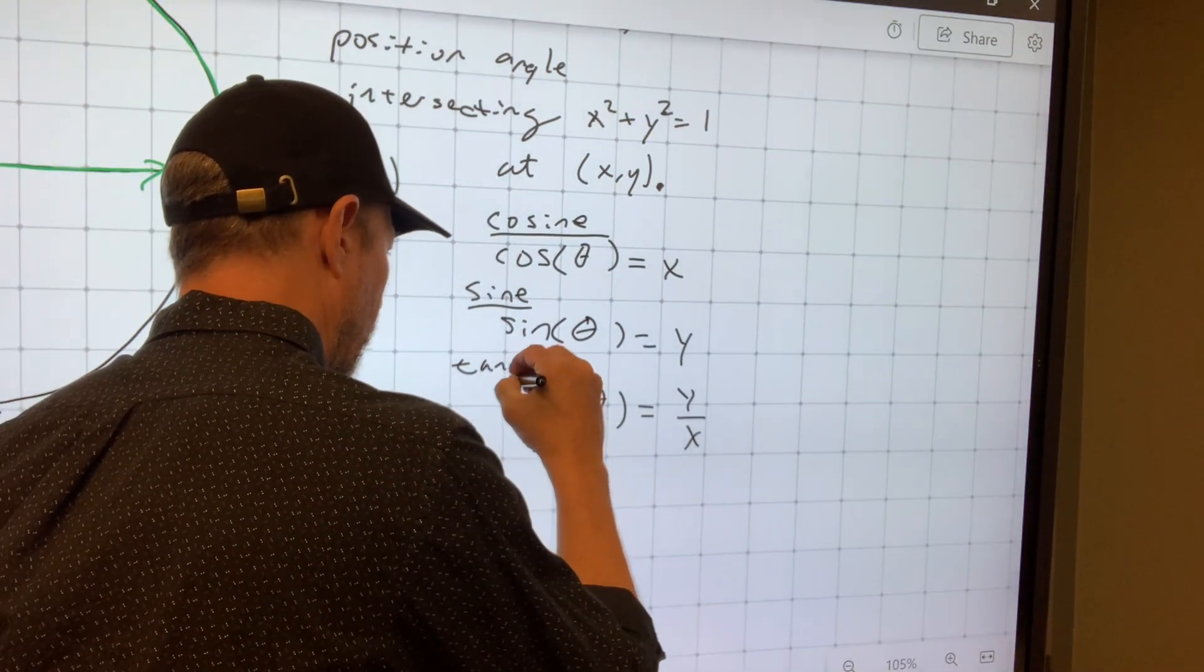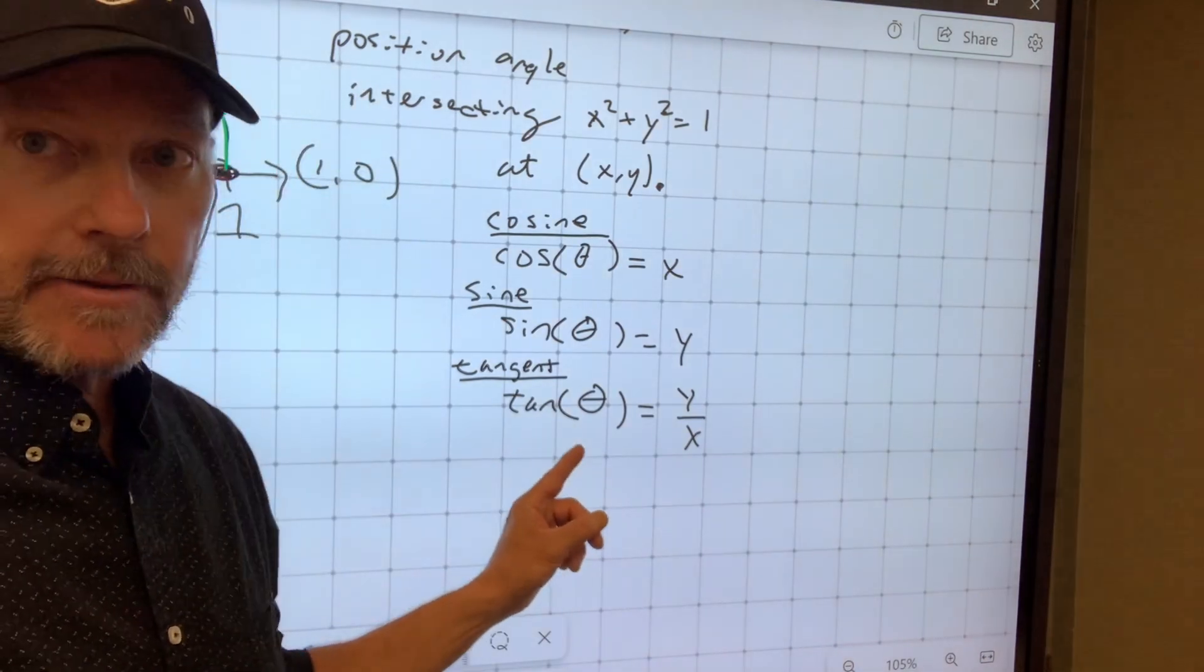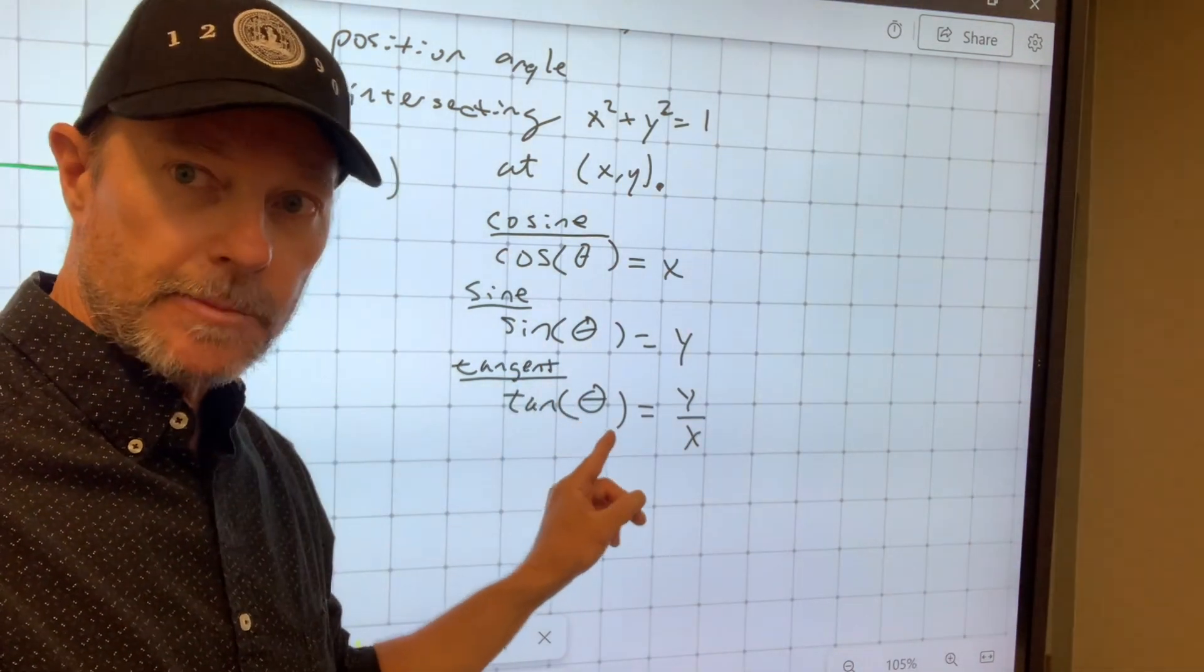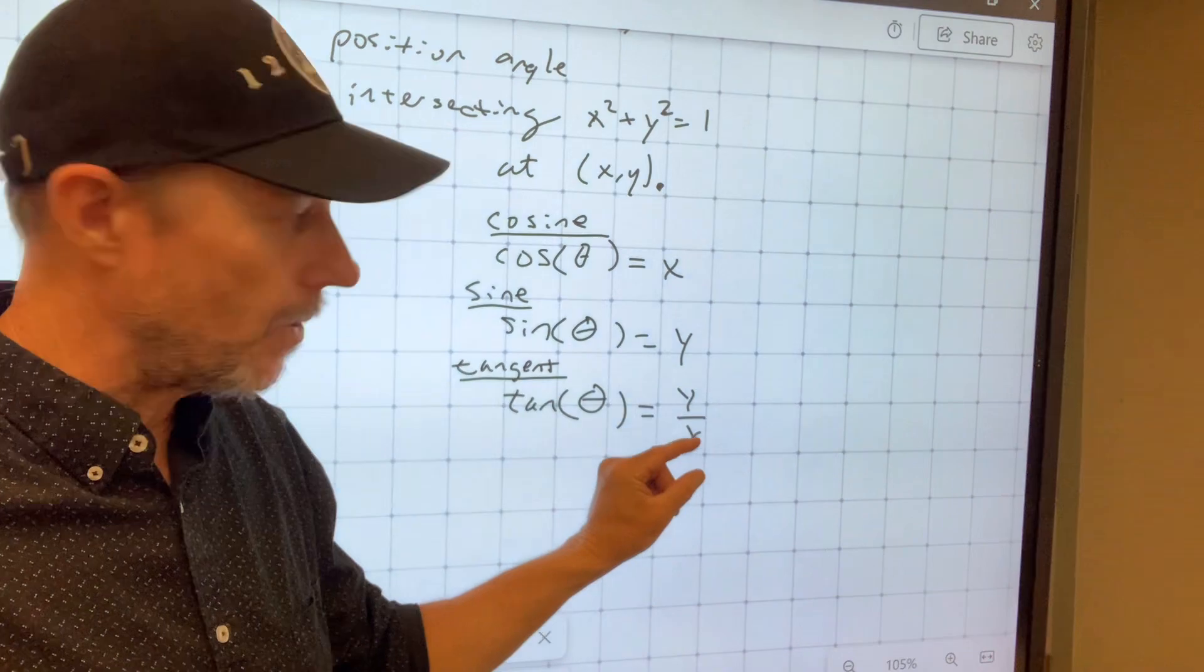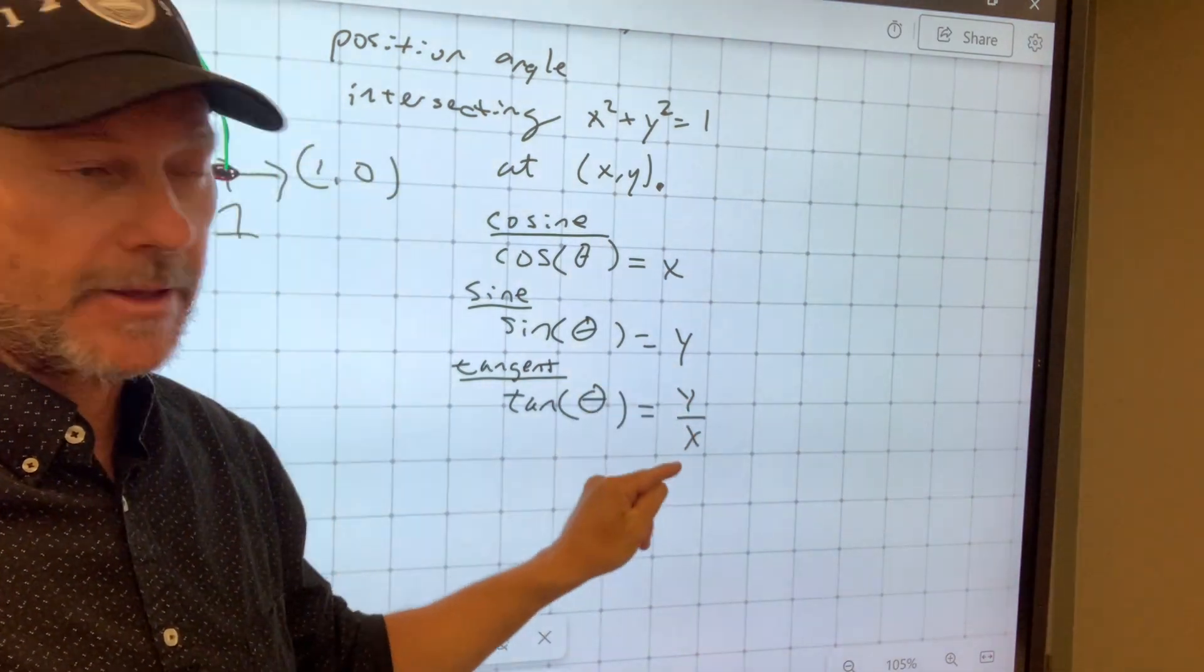And then finally, tangent, denoted with t-a-n, is the function that if you put in the angle measurement, you get out a ratio, a number generated by the ratio, the fraction of the y-coordinate divided by the x-coordinate.